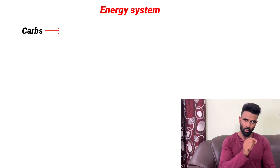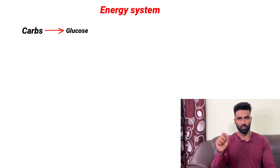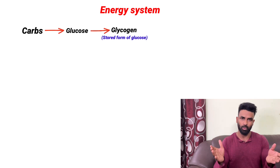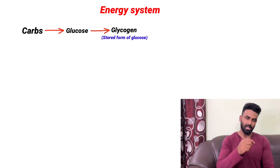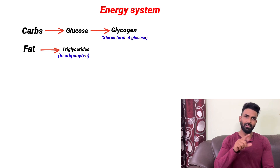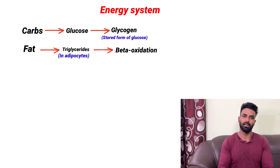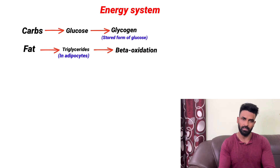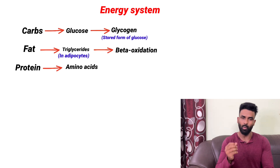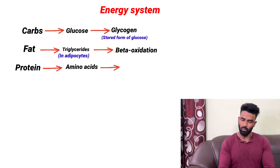We use macronutrients. Carbohydrates are stored in our body as glucose and glycogen — glycogen is the storage form of glucose. Fats are stored in adipocytes as triglycerides. In triglyceride breakdown, our body produces glycerol and free fatty acids, which are used in beta-oxidation to generate energy. Proteins, though not a primary source, can be broken down so we can use amino acids in our body.